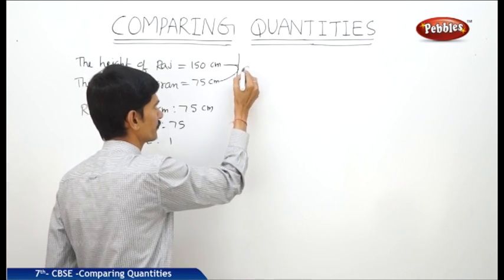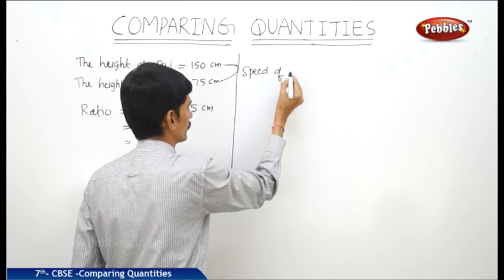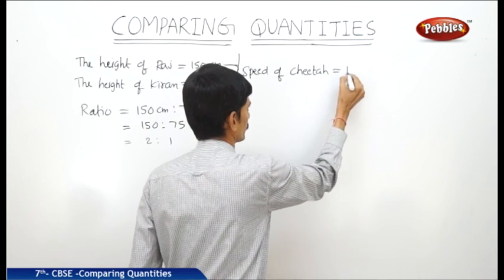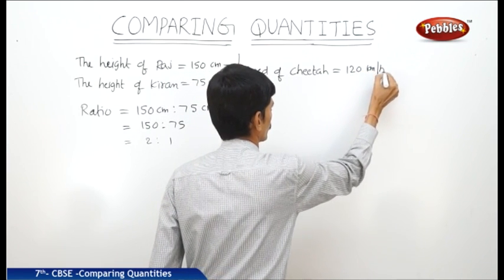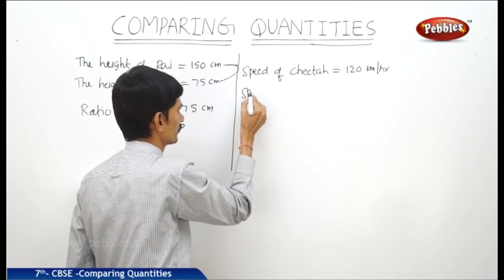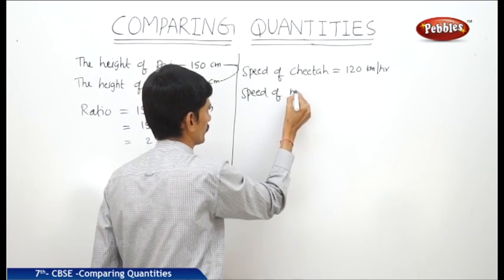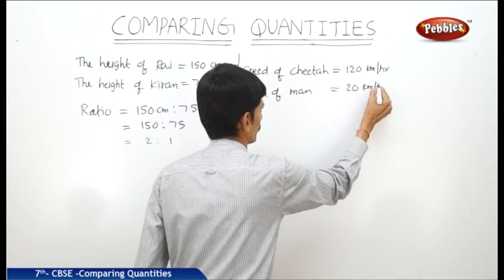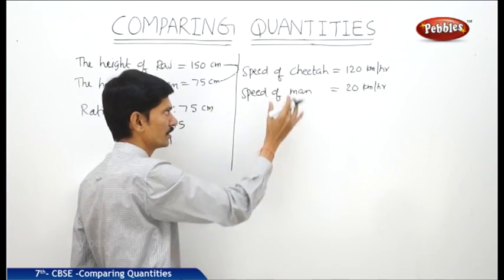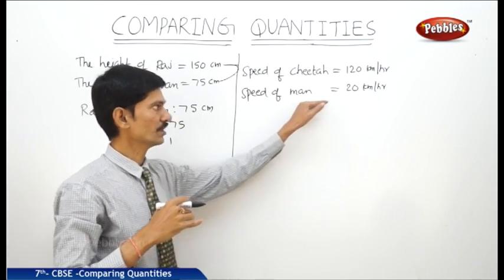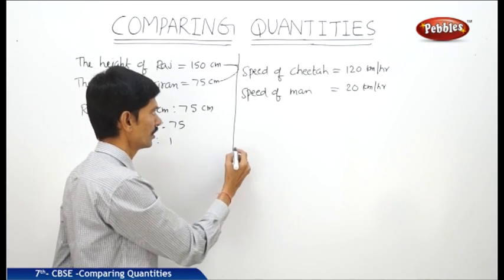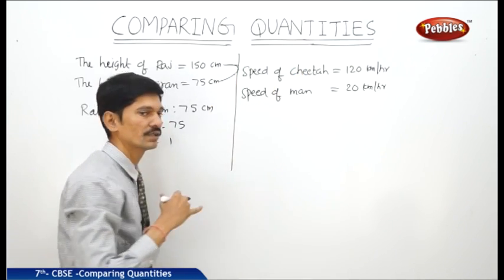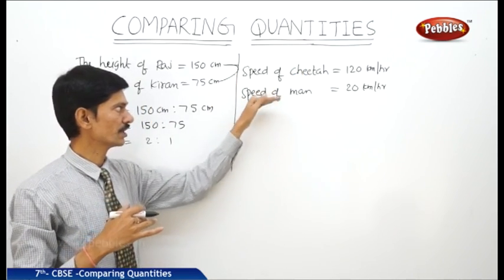Let us take another situation. The speed of a Cheetah equals 120 kilometers per hour. The speed of the Cheetah is 6 times that of the man, or we can say the speed of the man is one-sixth the speed of the Cheetah. Now let us take the ratio of the speeds of the Cheetah and the man.